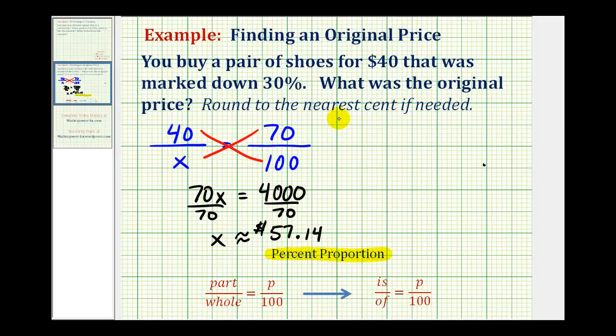I do want to show a second method for setting up this proportion using keywords. To use the keywords, we want to rewrite the given question into a more basic question. What I mean by that is, this question is really asking us 40 is 70% of what number?